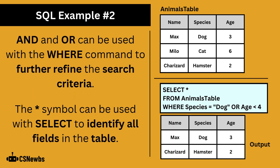AND and OR can be used with the WHERE command to further refine the search criteria. The star symbol can be used with SELECT to identify all fields in the table. In this example, all fields have been selected — that's name, species and age — from the animals table, where the species is dog or the age is less than 4.